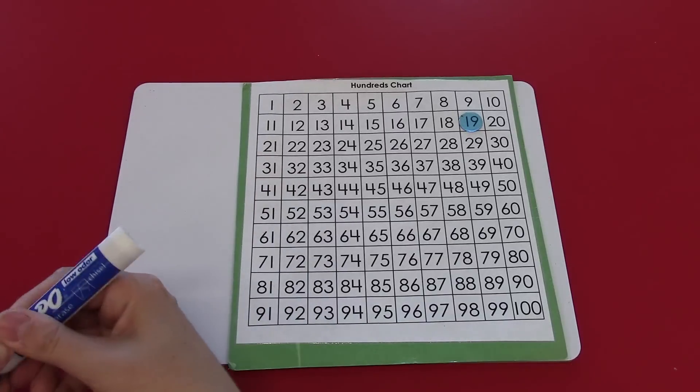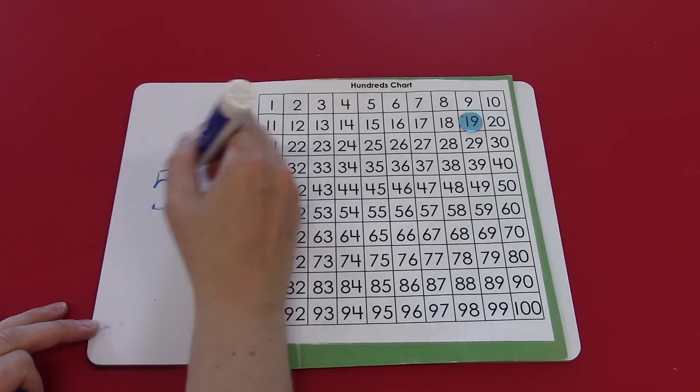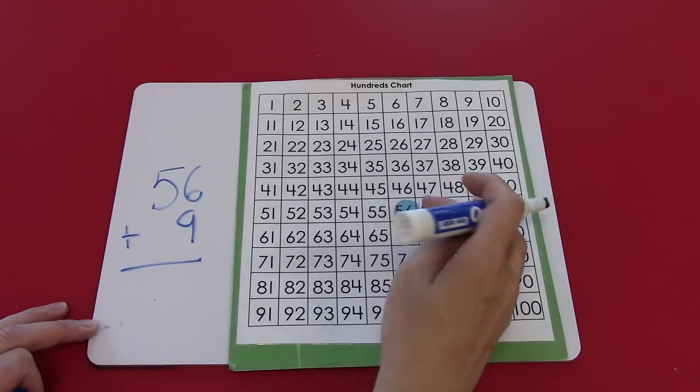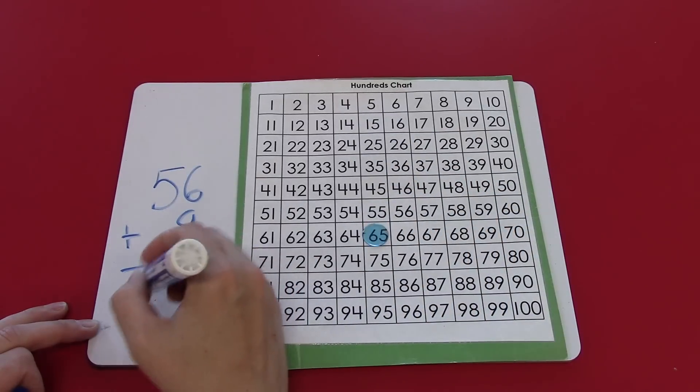Let's try one more. 56 plus 9. Diagonally to the left, 65.